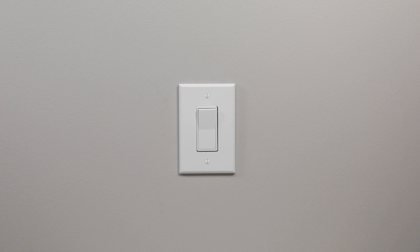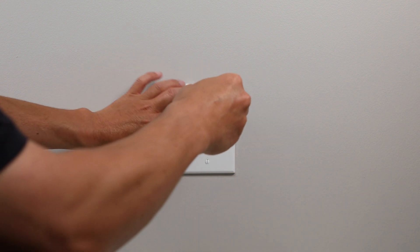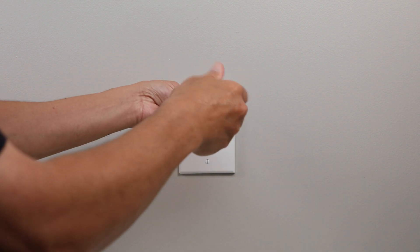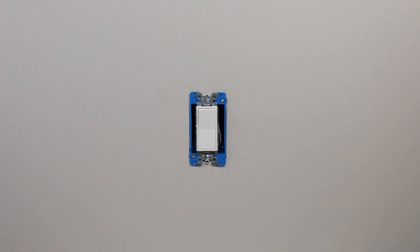Remove the existing faceplate from your current switch and use a voltage tester to check both sides of the switch, then pull it out, leaving the wires.